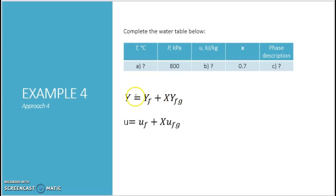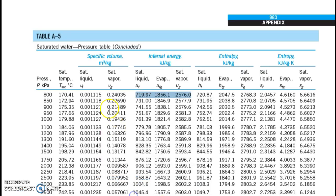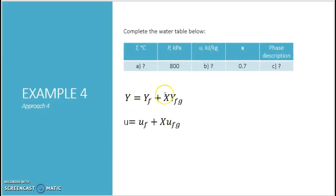We are going to make use of this general equation to find your internal energy. In fact, this general equation that represents Y can be used to find all the other extensive properties such as enthalpy, entropy or specific volume. But in this particular question we are going to use this general equation to find your U value. So we substitute this one into as UF, X, UFG.